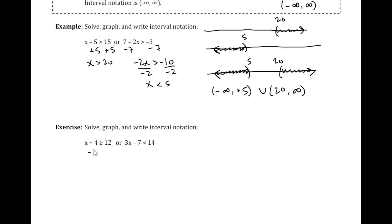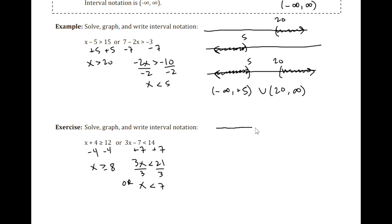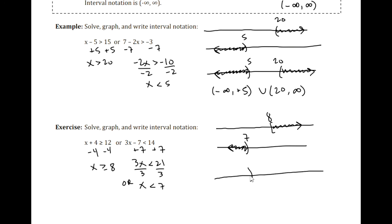One last example. We graph each inequality. It's all the x greater than or equal to 8. For our final graph, which represents the solution set, we write it as negative infinity to 7, union, bracket 8 to infinity.